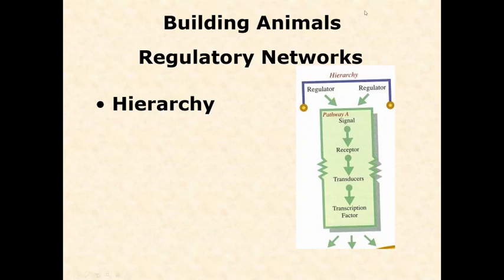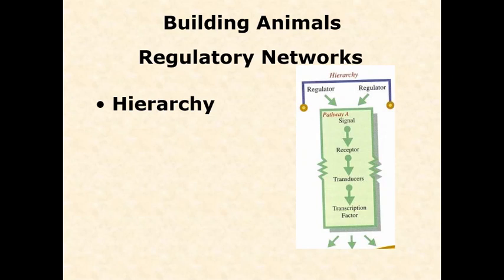We introduced this in the last lecture: we have a hierarchy with some sort of regulator that initiates a pathway either through a signal, a receptor, and then a transcription factor. Or if the regulator is itself a transcription factor, we can skip that pathway and that transcription factor goes into the cell to start the next step. For most of our toolkit genes, they themselves are the transcription factor. The gene product needs to get into the target cell, which usually happens through simple diffusion of the mRNA — then translated into the protein — or the protein itself diffuses through tissue to do whatever it is adapted to do.